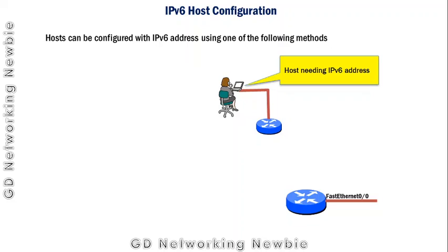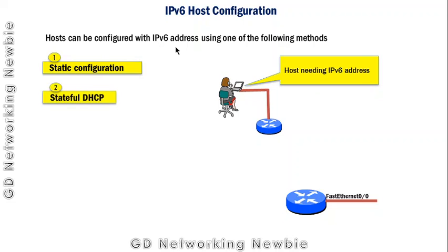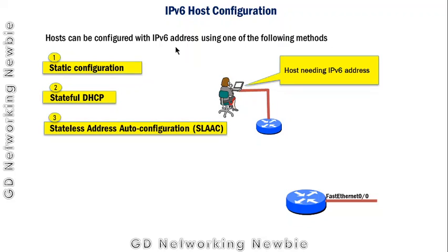Hi everyone, today we are going to discuss IPv6 host configuration. For illustration, there is a client with a laptop and the laptop needs an IPv6 address to be part of some computer network. This host machine can be configured with an IPv6 address using one of the following methods: the first method is static configuration, the second is stateful DHCP, and the third is stateless address auto configuration.